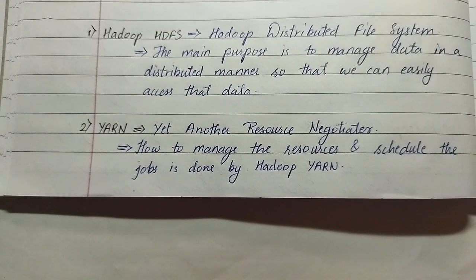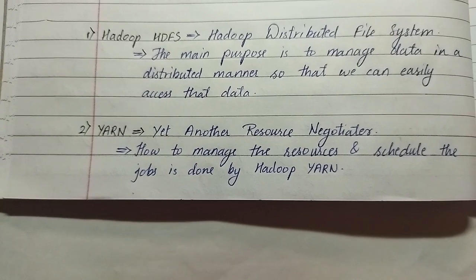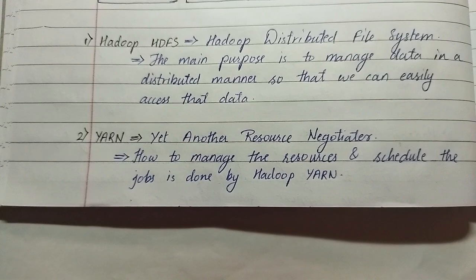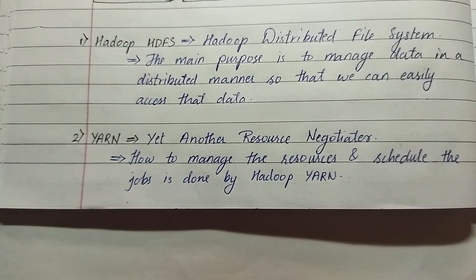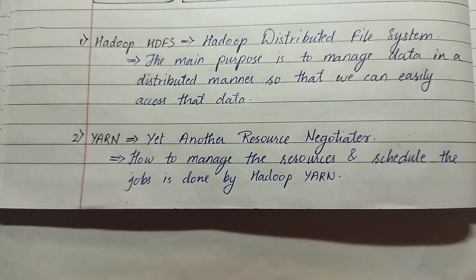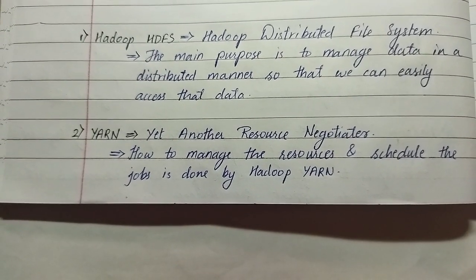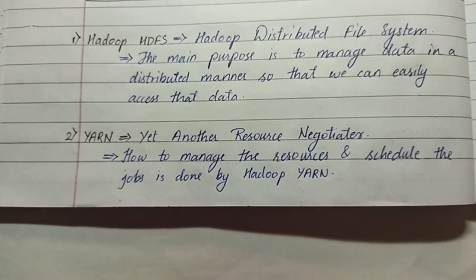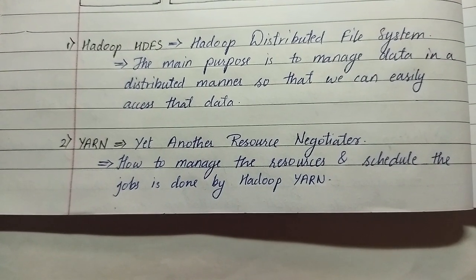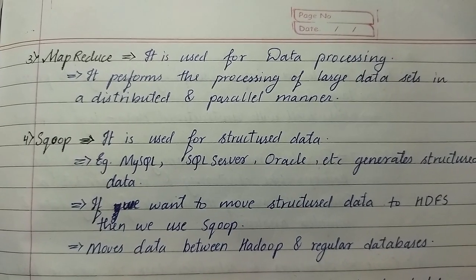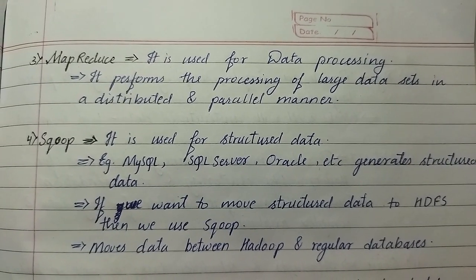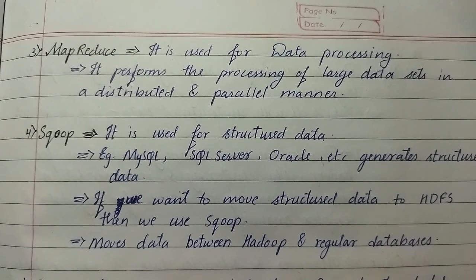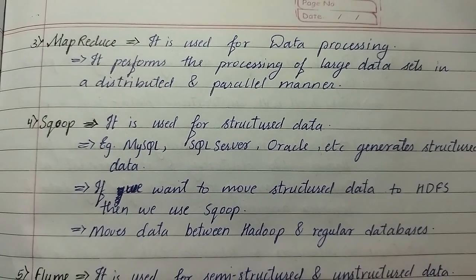First is Hadoop HDFS, also known as Hadoop Distributed File System. The main purpose is to manage data in a distributed manner so that we can easily access that data. Second is YARN, Yet Another Resource Negotiator, and how to manage the resources and schedule the jobs is done by Hadoop YARN. Third is MapReduce, and it is used for data processing. It performs the processing of large data sets in a distributed and parallel manner.